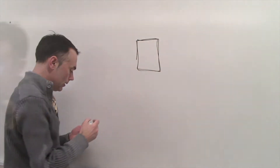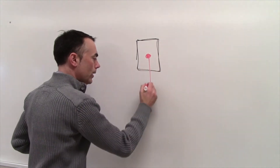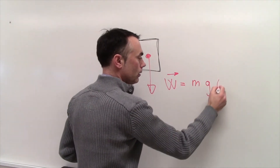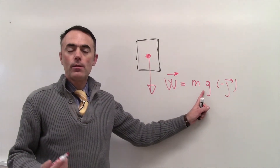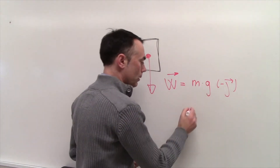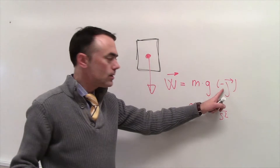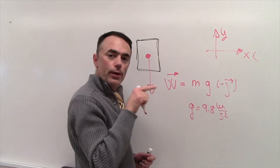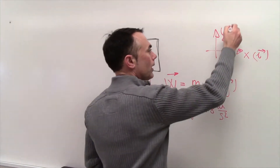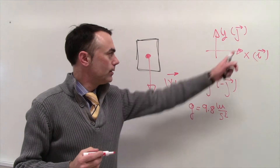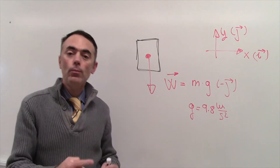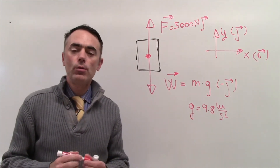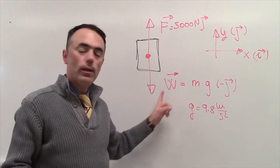We have the elevator, and the forces include the weight pointing downwards — it is a vector. The weight is written as mg in the negative j-hat direction, where mg is the magnitude: mass times g, and g is 9.8 meters per second squared. We use unit vectors i-hat for x and j-hat for y. The applied force F is 5,000 newtons in the positive j-hat direction, pointing upwards.